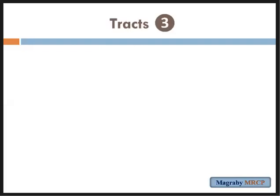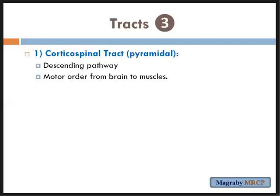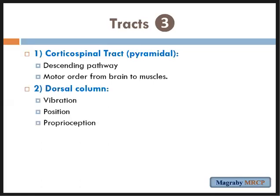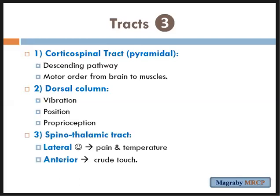We have three important tracts in neurology to discuss in detail. First is the corticospinal tract, also called the pyramidal tract. Second is the dorsal column tract. Third is the spinothalamic tract. The corticospinal tract is a descending tract — it carries motor orders from the motor cortical area to the muscle.